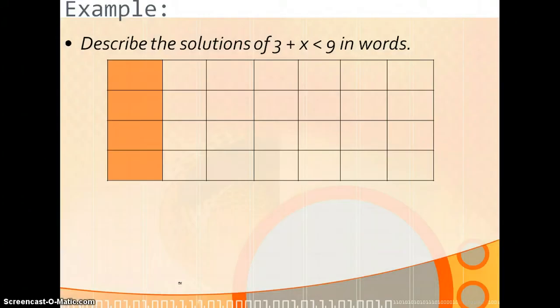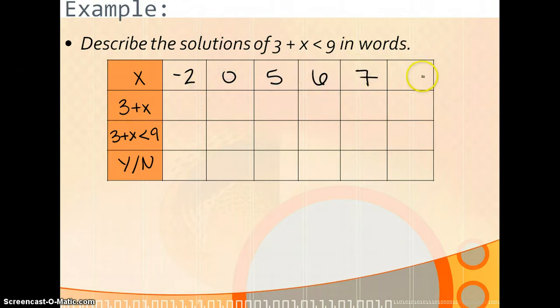The example says describe the solutions of 3 plus X is less than 9 in words. The first thing that we want to do is use a chart, it kind of just helps. We're going to plug in some X's. We're going to find out what 3 plus X is. And then we're going to check the inequality itself. Is the number that we found in row 2 less than 9? This is either going to be a yes or a no part. So let's plug in things like negative 2, 0, 5, 6, 7, and 10. I'm using easy numbers just to make my life easier. You can use decimals, you can use fractions, but I'm just going to use whole numbers.